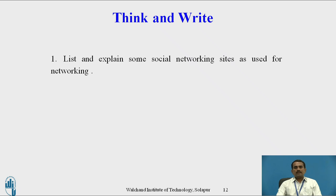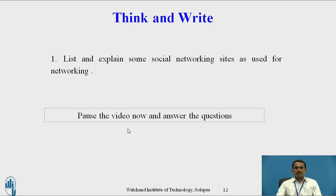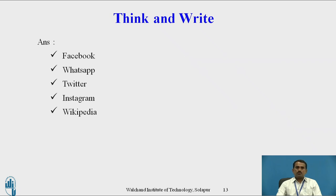Think and Write question-answer session: List and explain some social networking sites used for networking. Pause the video and answer the above question. The answer for the above question is: Facebook, WhatsApp, Twitter, Instagram, and Wikipedia. These are the websites that can be used for getting information from the network.